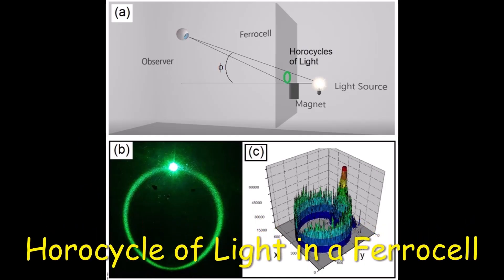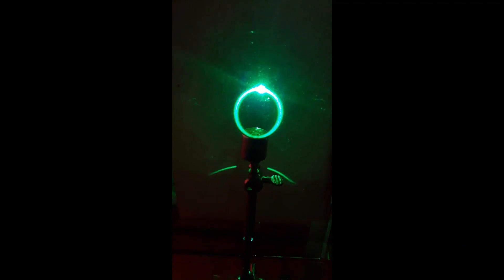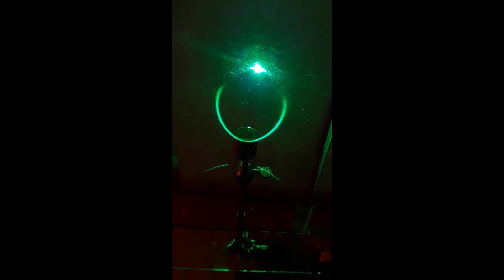Horocycle of light in a ferrocell. We can observe the formation of a horocycle and how it changes as the angle of observation changes.